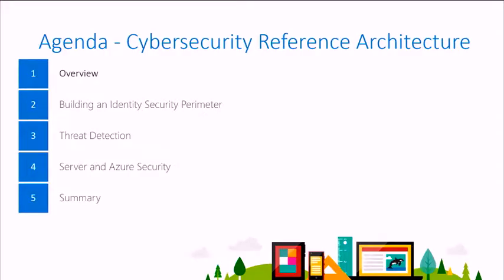We'll have five modules today. The first is this overview where we'll go over the whole topic. Then we'll talk about how to build an identity security perimeter, taking those building blocks and which ones to focus on. The third module will be on threat detection, addressing threats from a strategic perspective and the reference architecture components that support that. Then we'll talk about server and Azure security as foundational components, and finally summarize and close out.